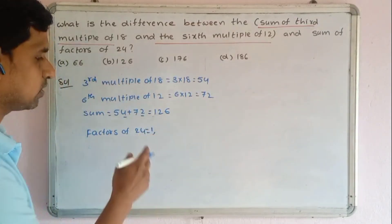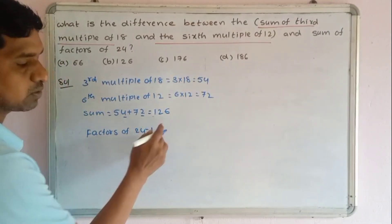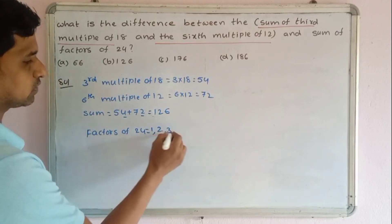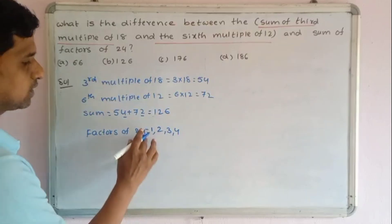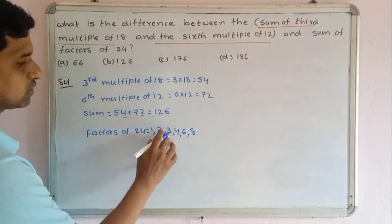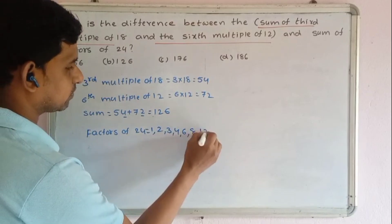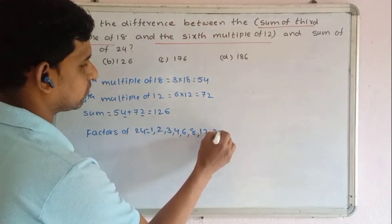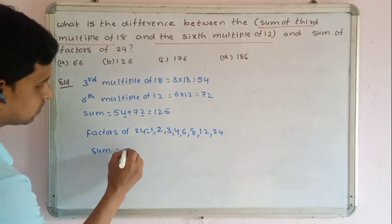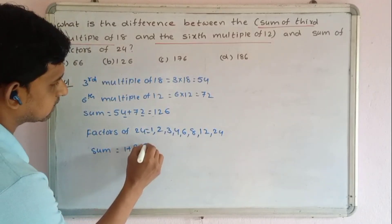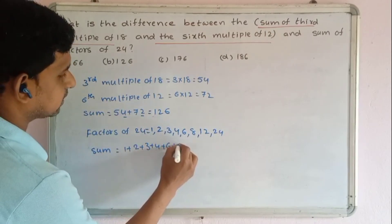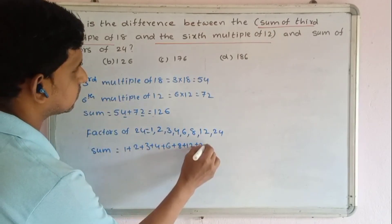Listing the factors of 24: 1, 2, 3, 4, 6, 8, 12, and 24. These are all the factors. Sum of factors equals 1 plus 2 plus 3 plus 4 plus 6 plus 8 plus 12 plus 24.